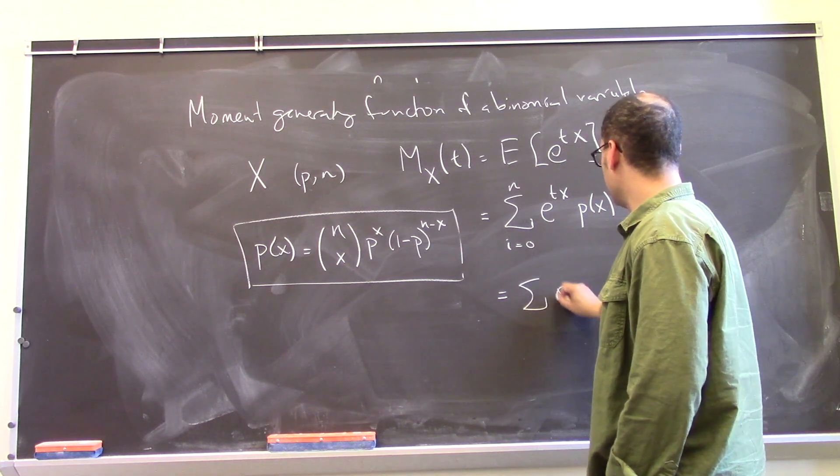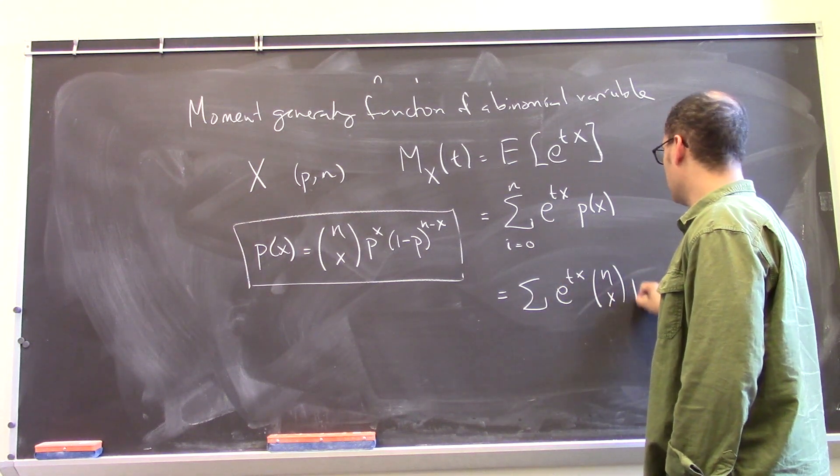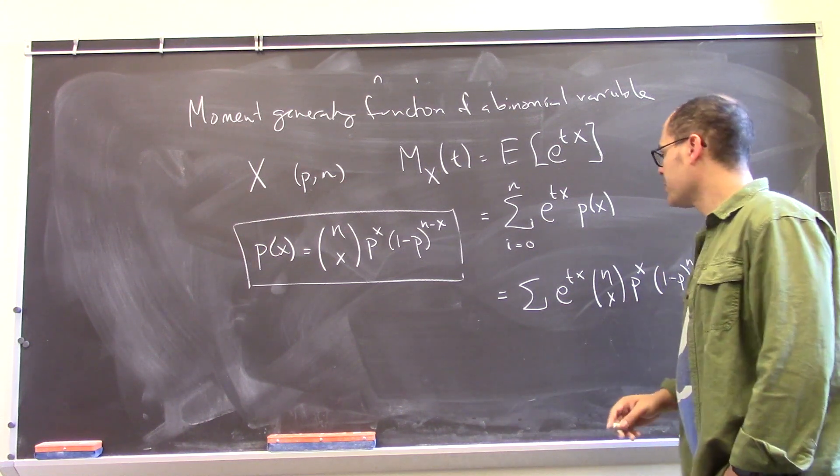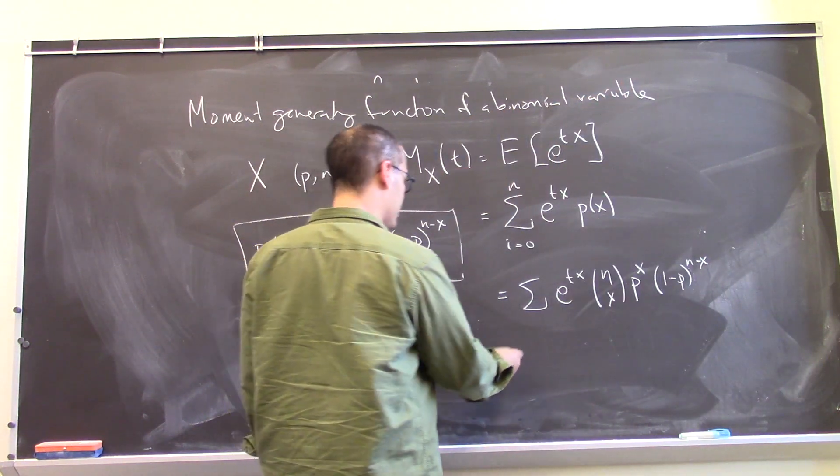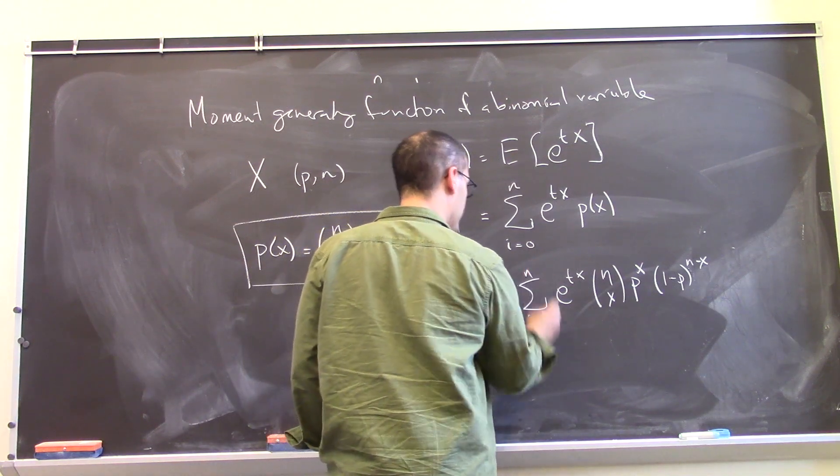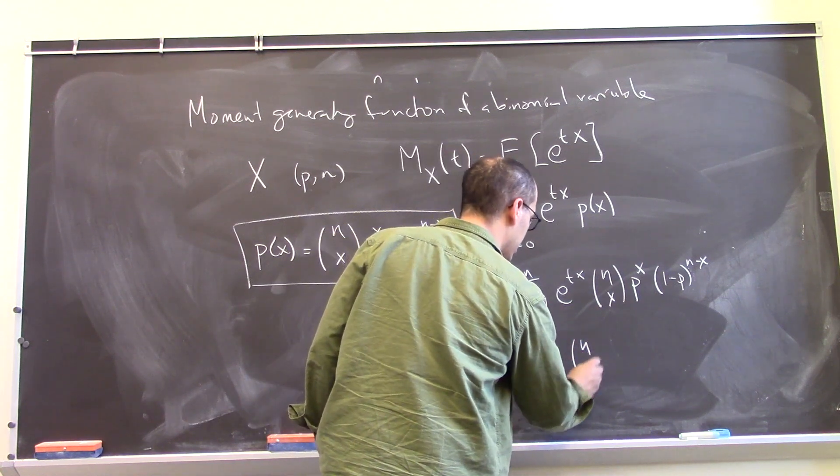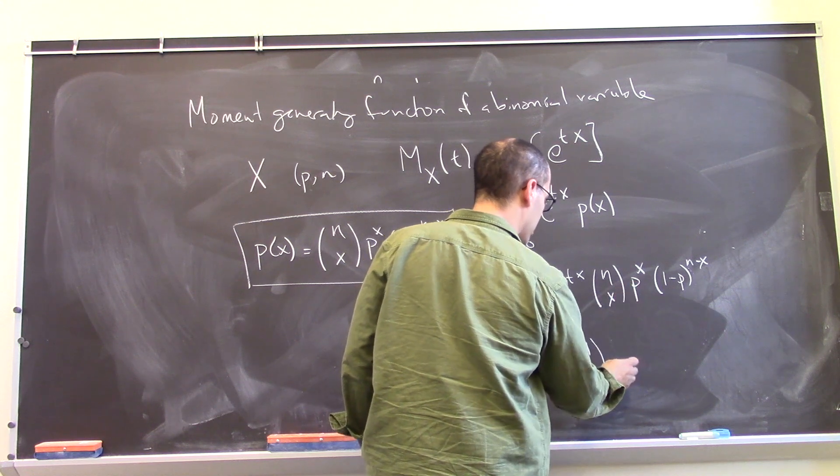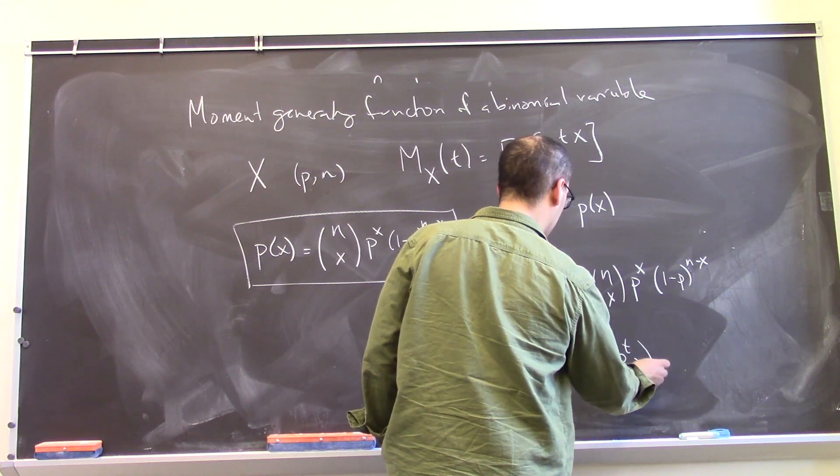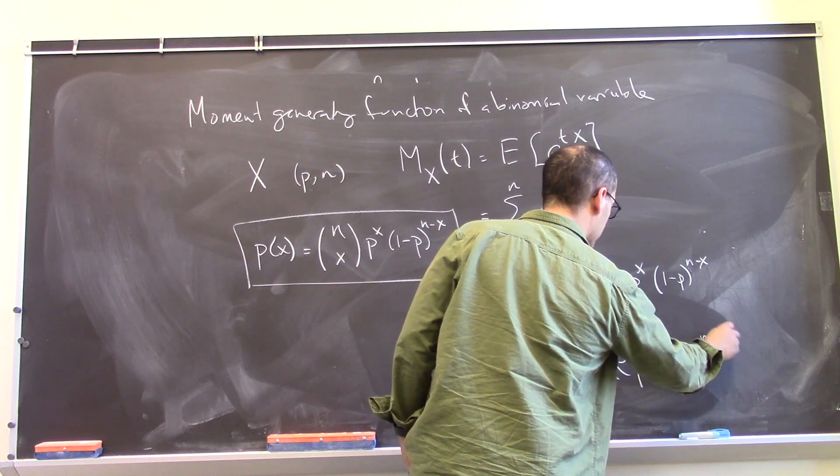Now we have e to the tX times this, n choose X, p to the X, 1 minus p to the n minus X. And we can regroup this a little bit. So this is i equals 0 to n, n choose X. I'm going to bring these together because I have e to the t times p all to the power X, 1 minus p to the n minus X.